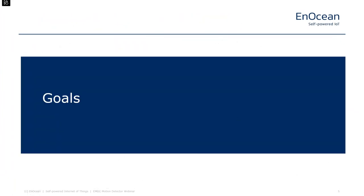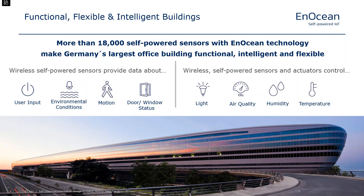First of all, let's understand what our goals are in building automation. Our aim is to enable functional, flexible and intelligent buildings. If we look at the biggest office building in Germany — the Squaire located in Frankfurt right outside the airport, Germany's largest office building — it uses over 18,000 self-powered sensors with EnOcean technology to make the building not only functional but also intelligent and flexible.